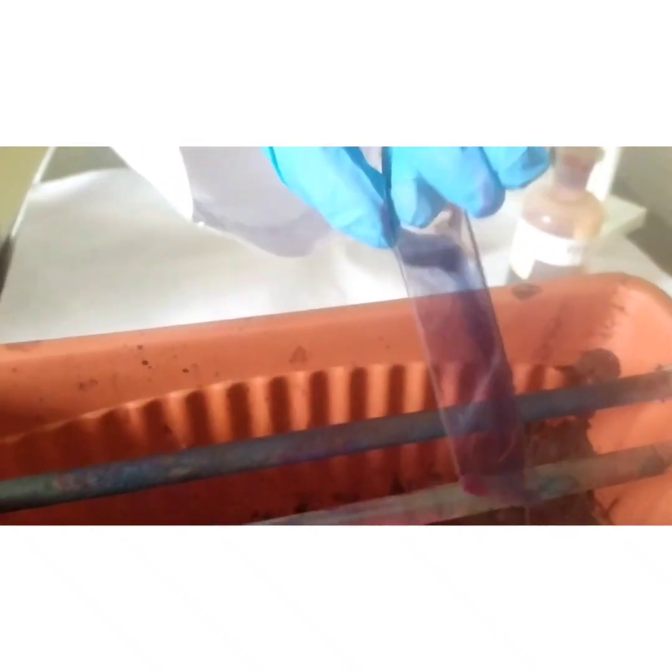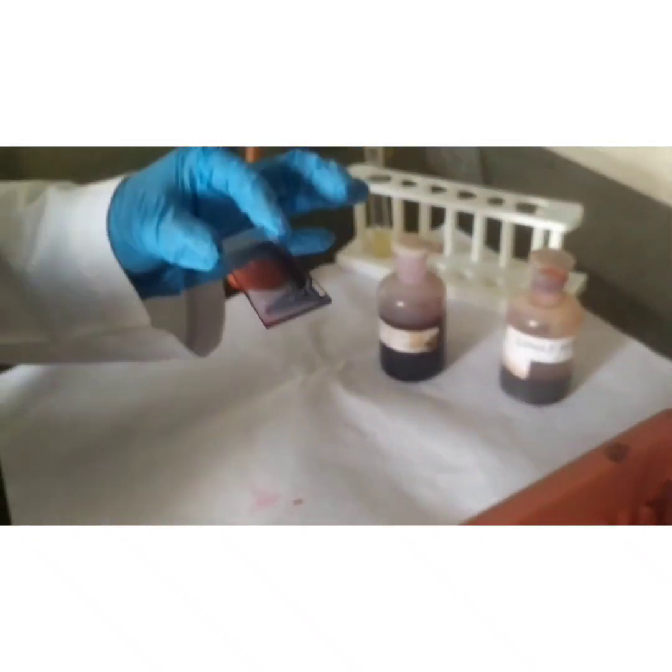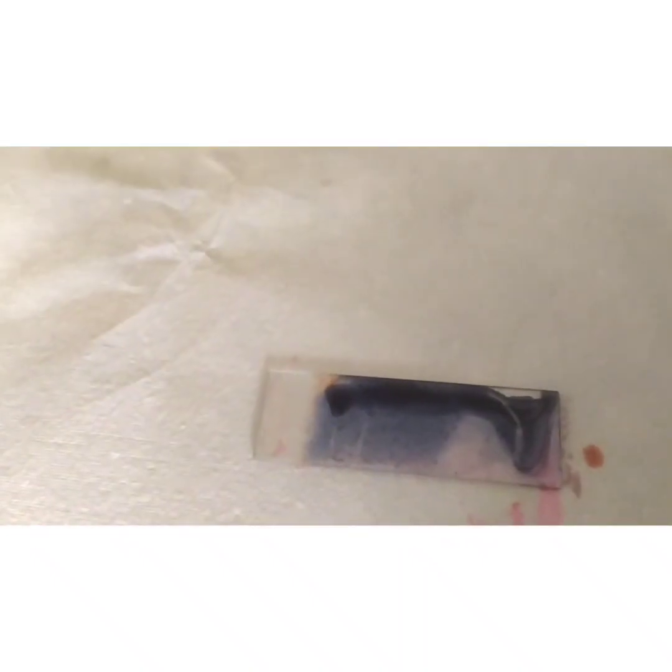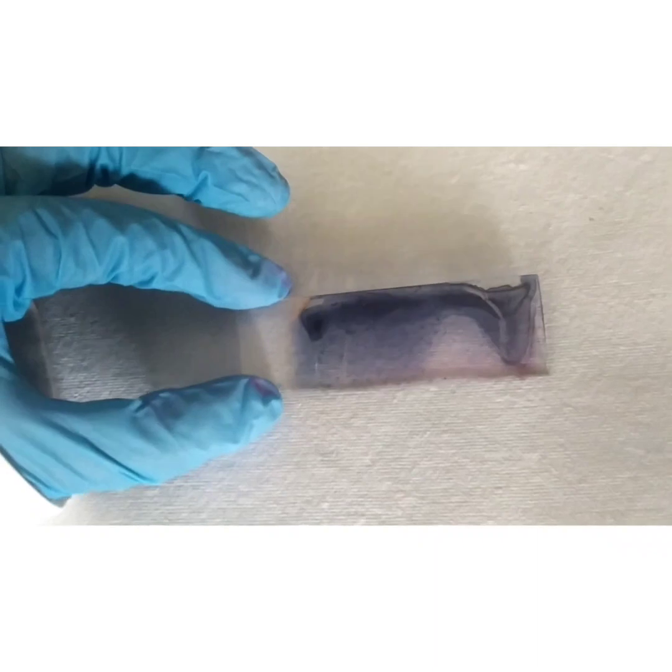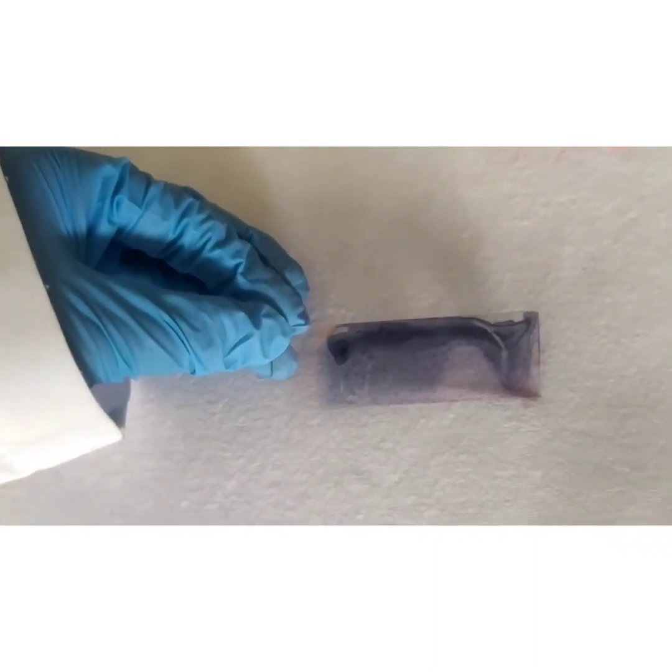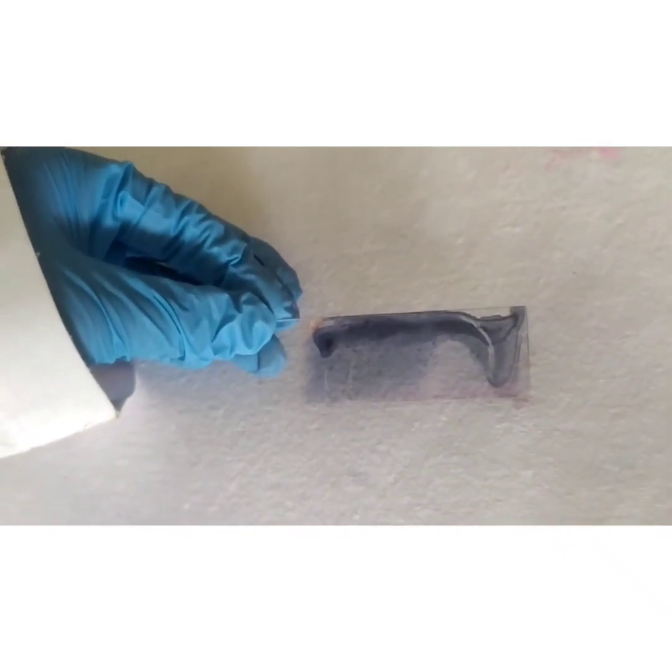Allow the smear to air dry. Once it is dried, now observe it under the oil immersion objective, where the cells will appear red, the capsule around it will appear colorless, and the entire background will appear blue.